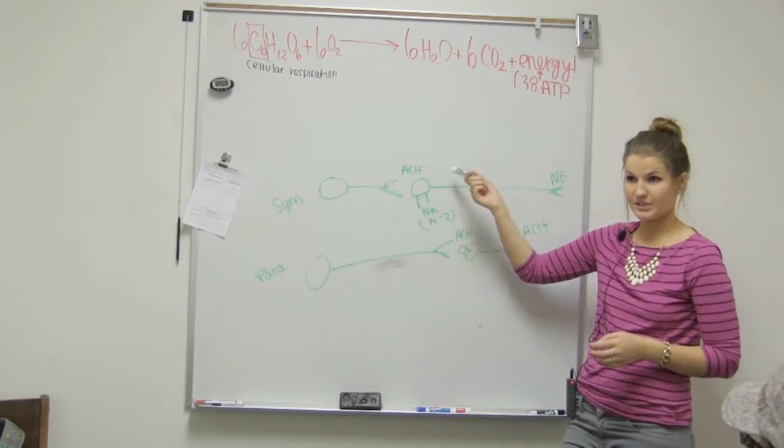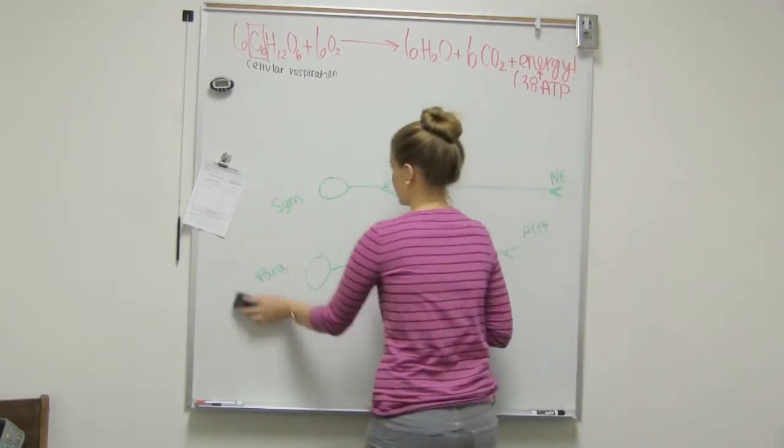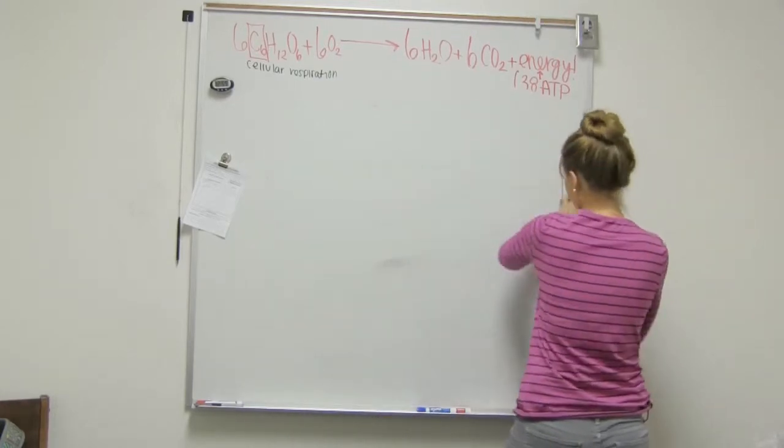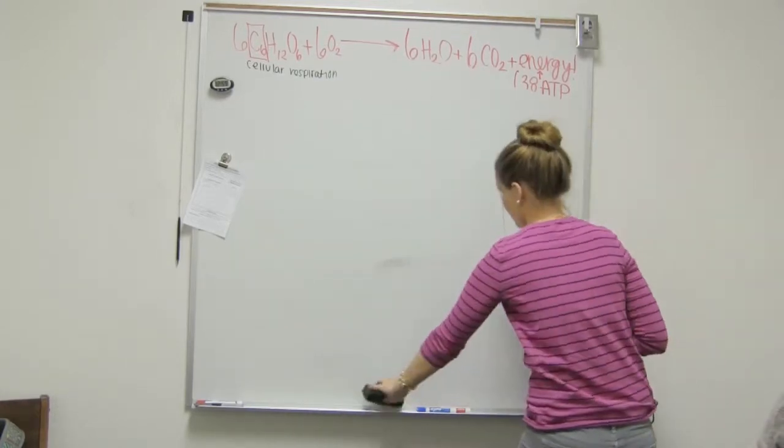So let's go back to our acetyl-CoA formation real quick, because that one's a pretty simple step. That's the second step, right? Yep. So step one is glycolysis, and step two is acetyl-CoA formation.